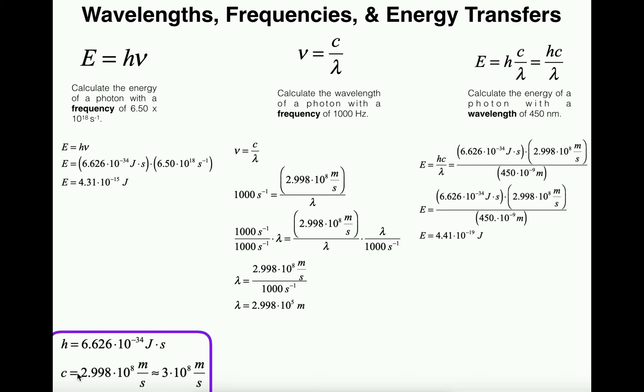I've never run into a problem where you need so much accuracy that you have to use 2.998. It's pretty much always sufficient to use 3 × 10⁸, although I'm going to use the more accurate form here. I'm going to be solving for wavelength. Let's plug in what we know. Our frequency is 1000 Hertz or 1000 inverse seconds. Our c is a constant we should memorize: 2.998 × 10⁸ meters per second, the speed of light, divided by lambda which is our wavelength.